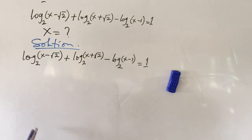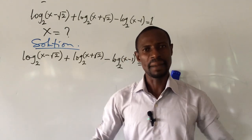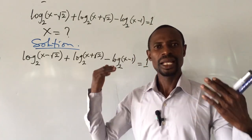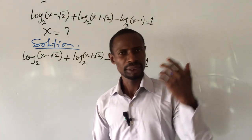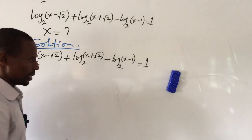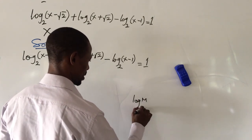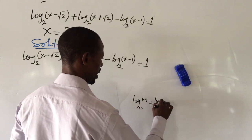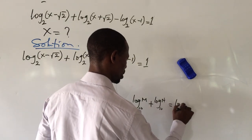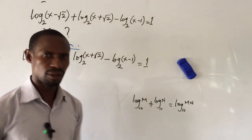In this question we are going to make use of some of the laws of logarithms. I have a video showing the laws of logarithms — about nine of them — showing up here, so you can watch that video to know the major laws foundational to logarithm operations. The ones we are going to apply here are the multiplication law and the division law. The multiplication law says that if you have log M base 10 plus log N base 10, having the same base, you multiply the logs to get log MN base 10.